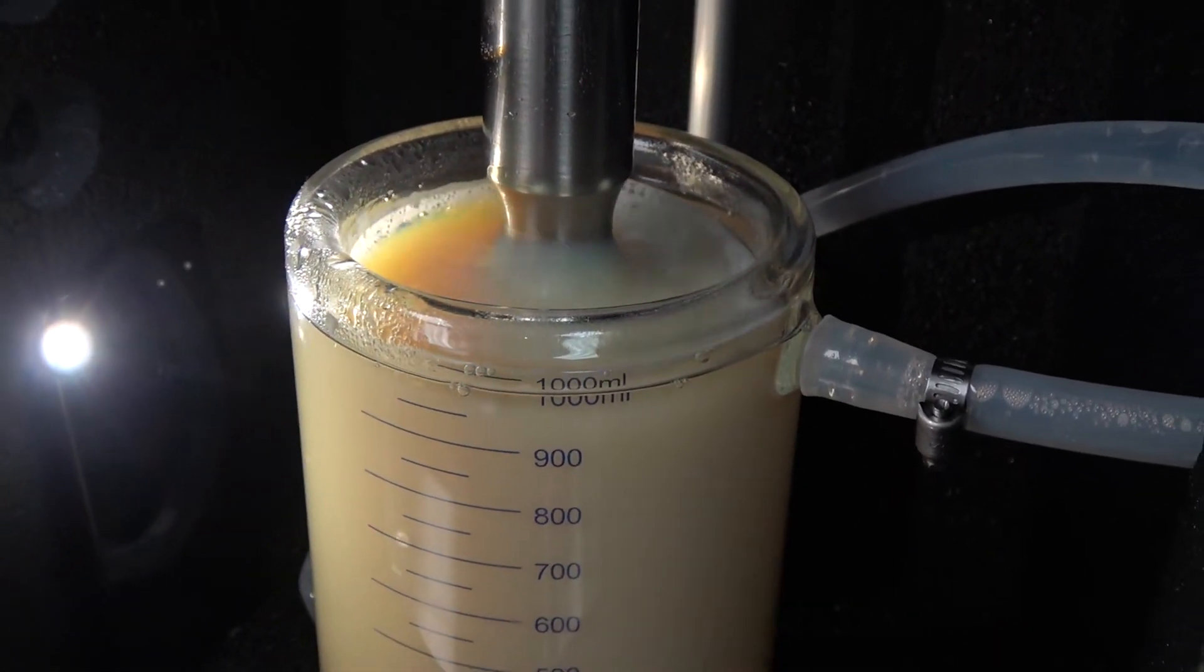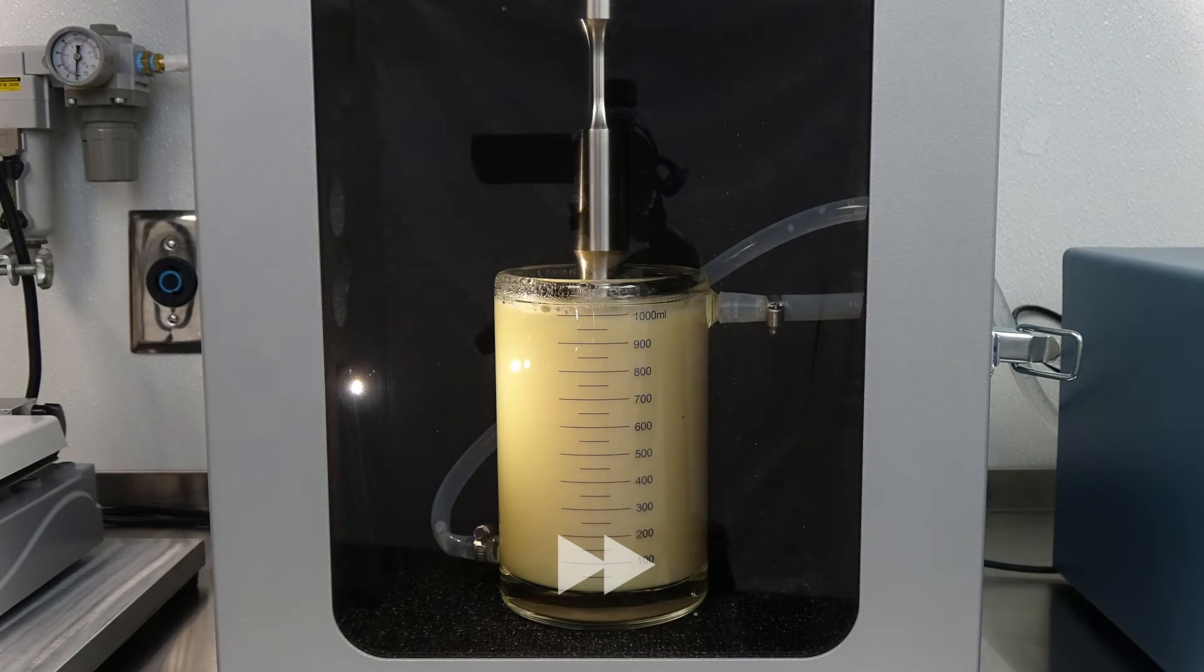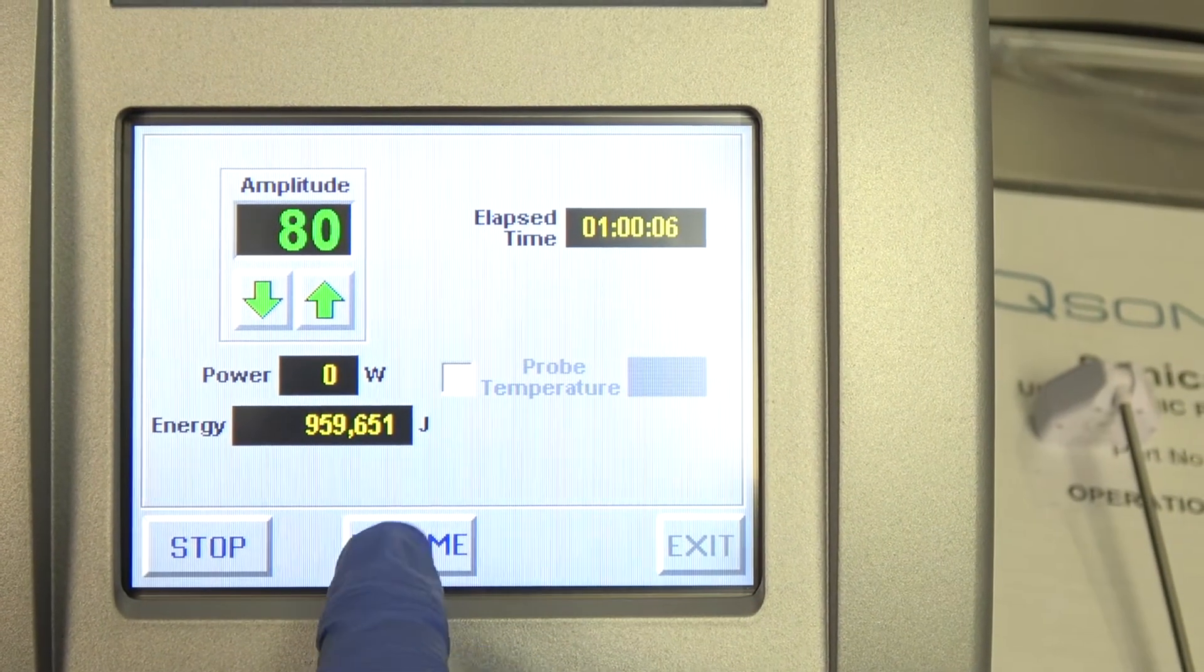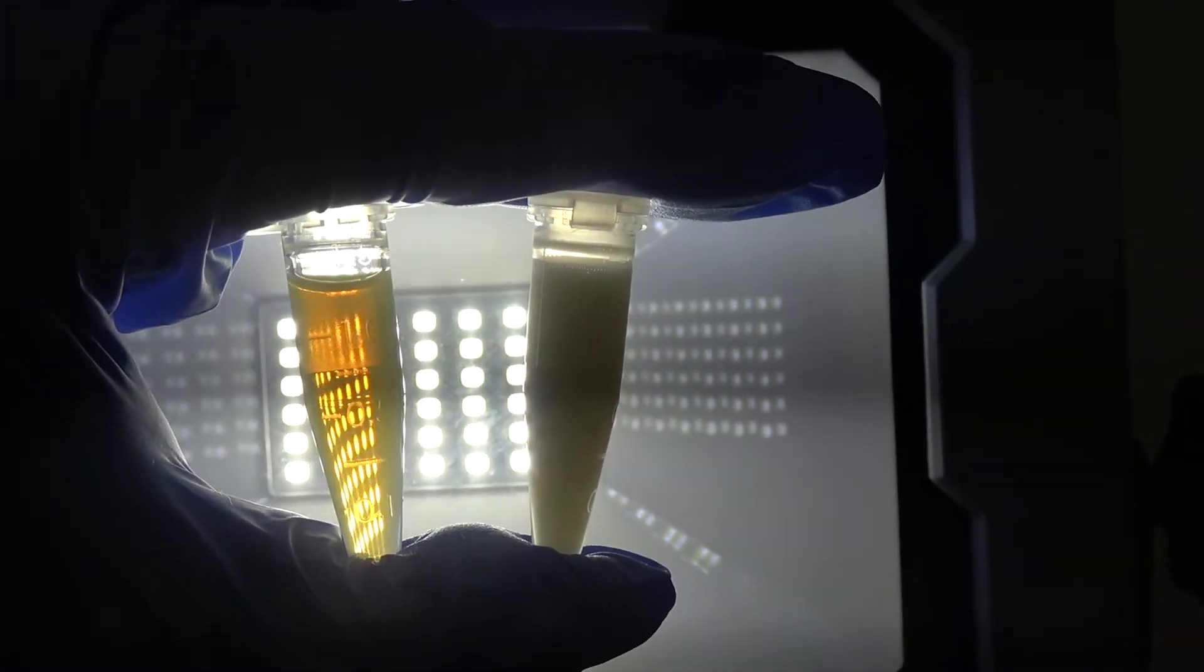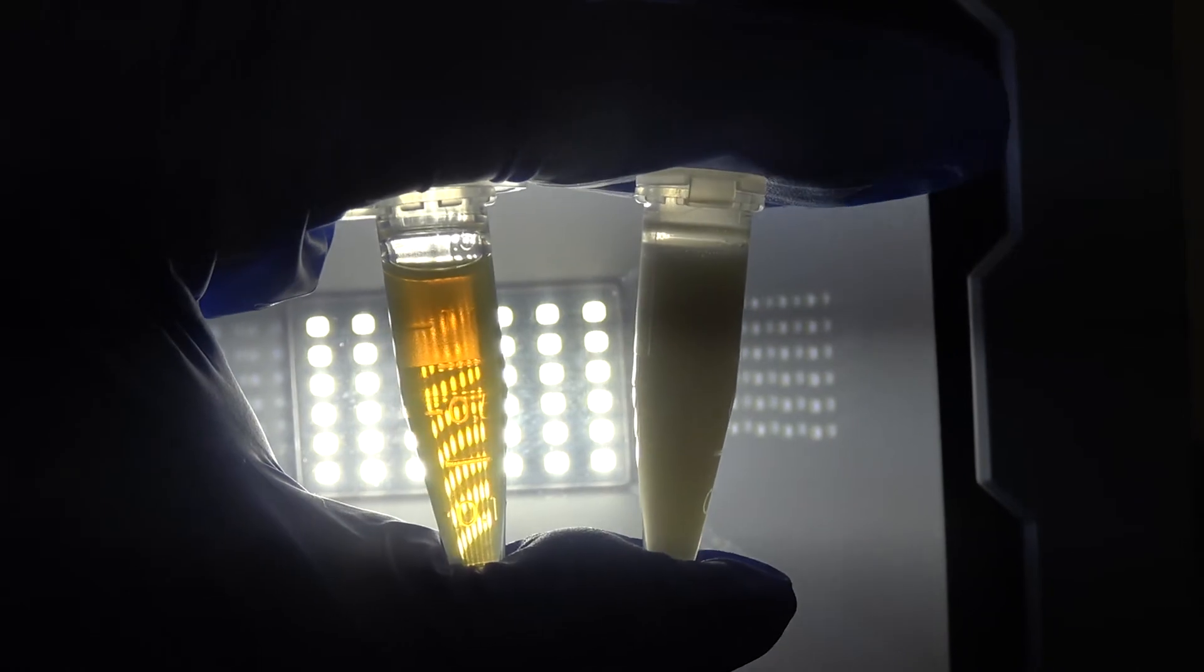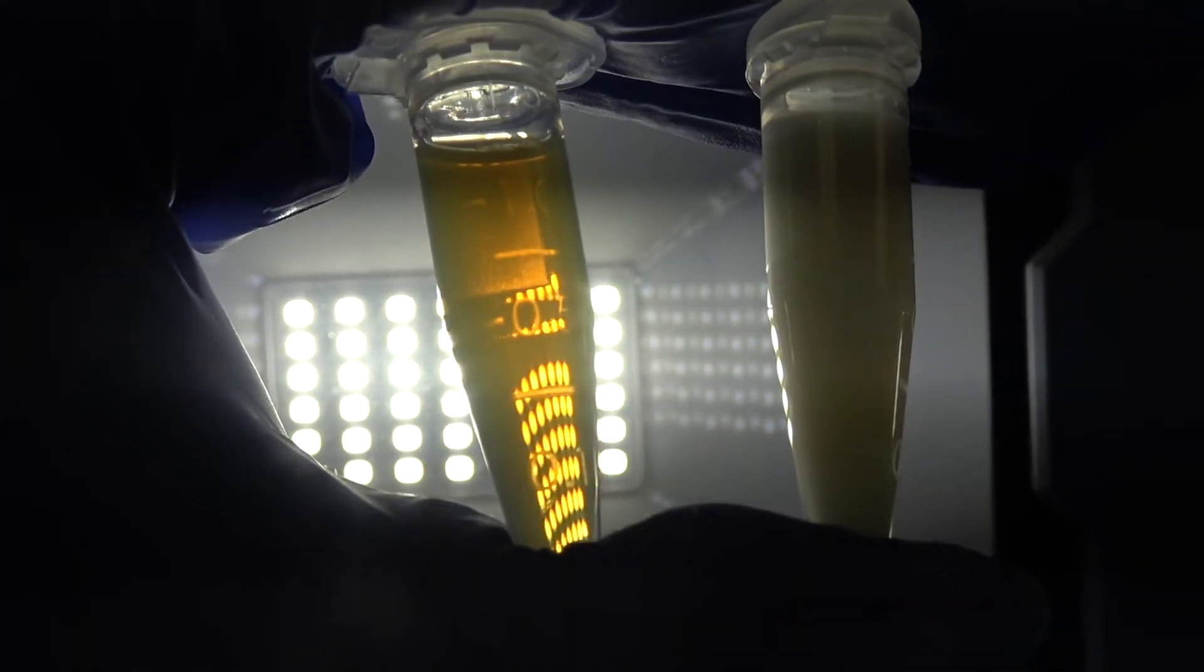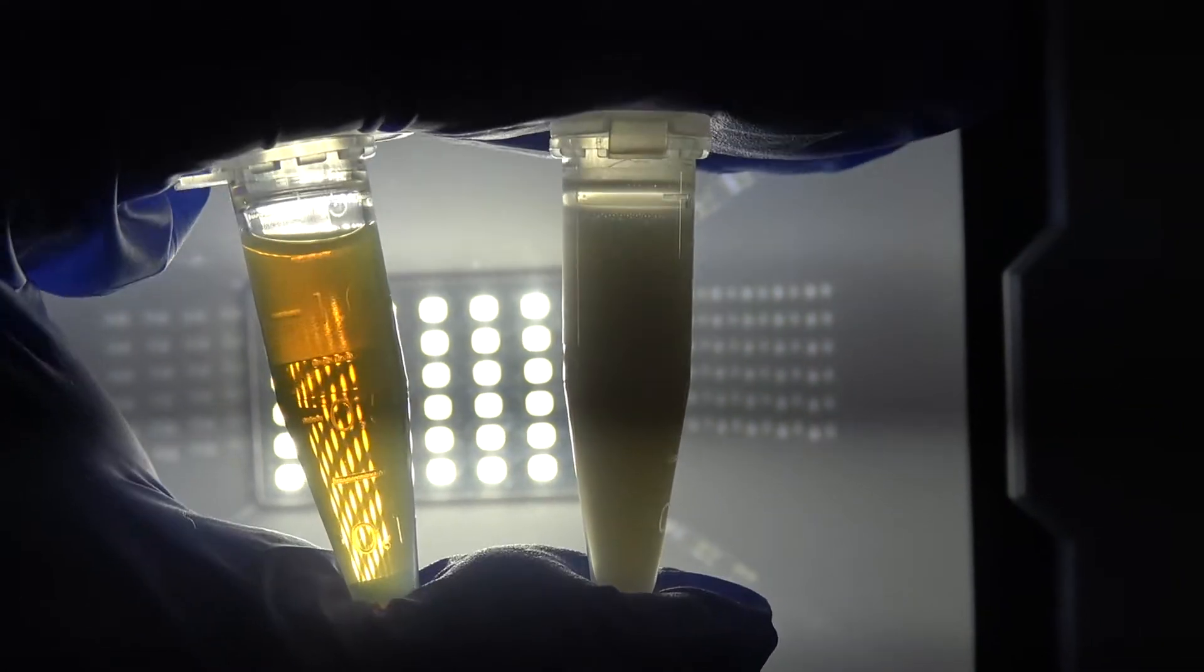You can assess progress by monitoring the color and clarity of the product. As particle size diminishes, the particles no longer scatter visible light and translucency increases. By the one hour point, we were satisfied with the transparency of the product. Assess the clarity of the emulsion in a small transparent container against a bright light. By the one hour point, you should see a dramatic increase in clarity in the sonicated sample.